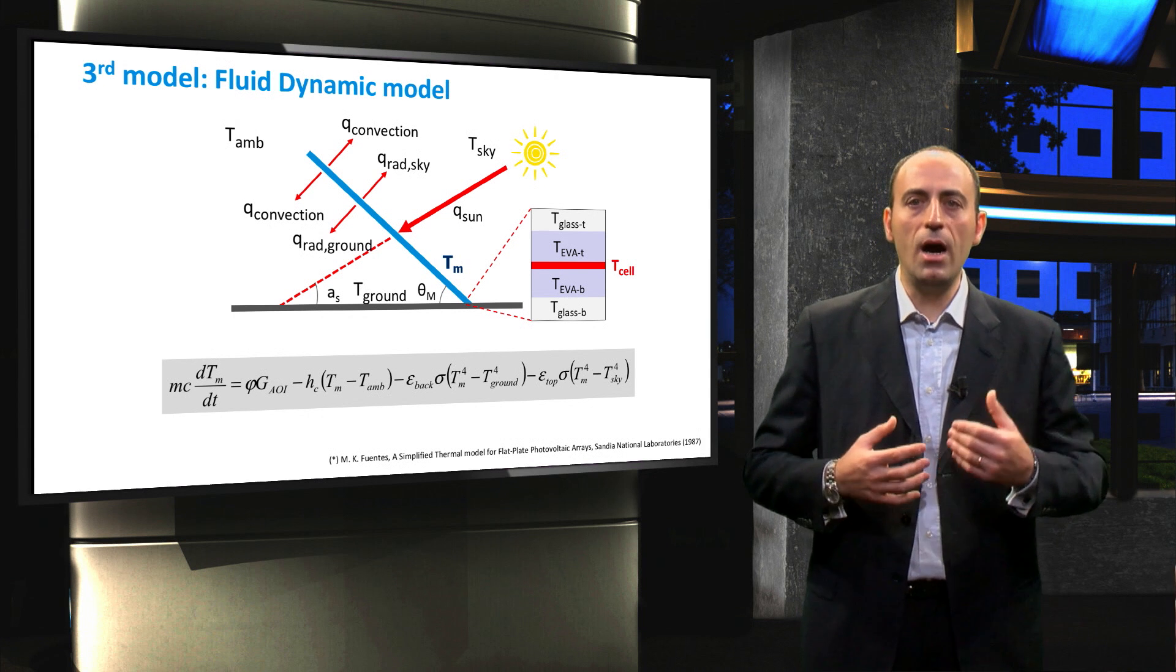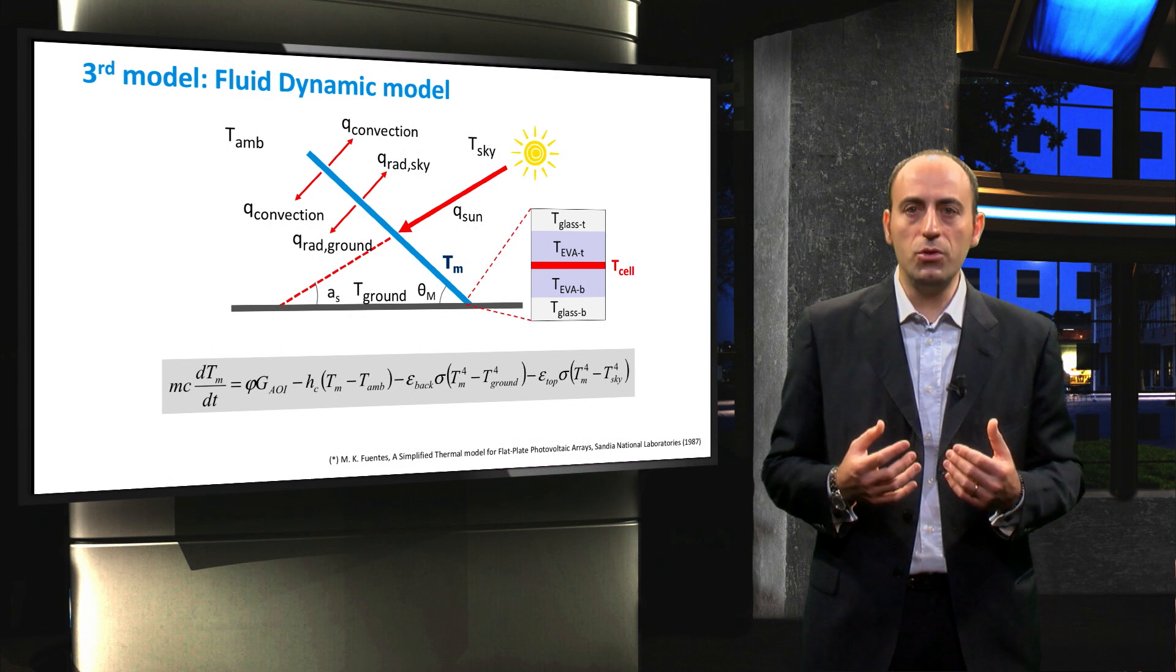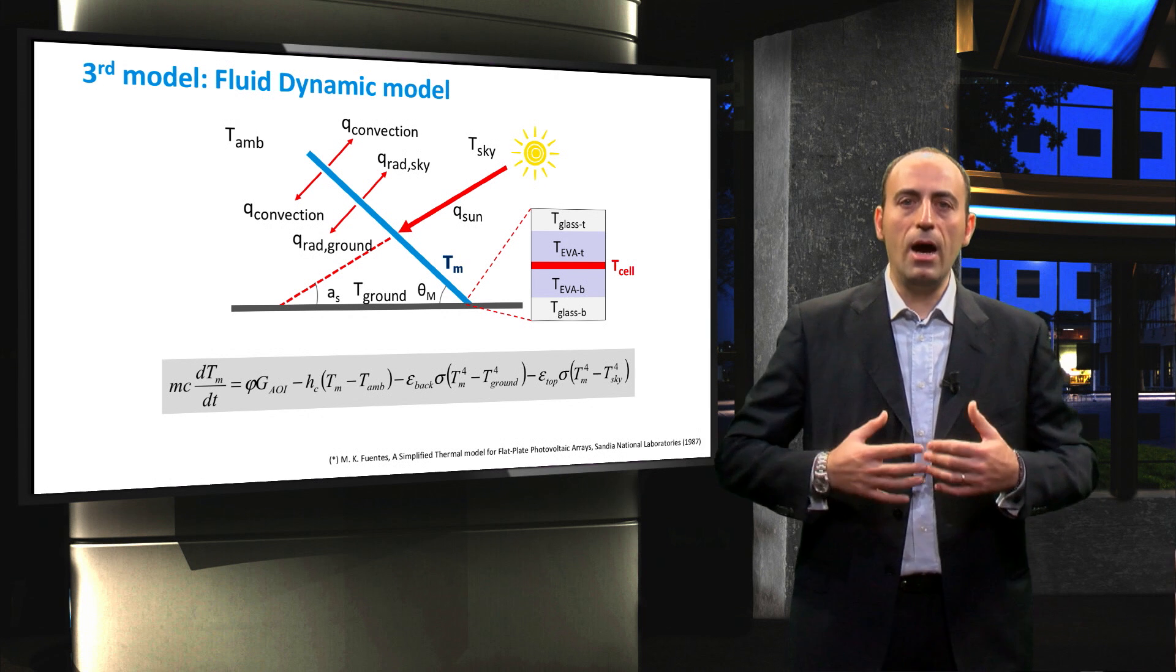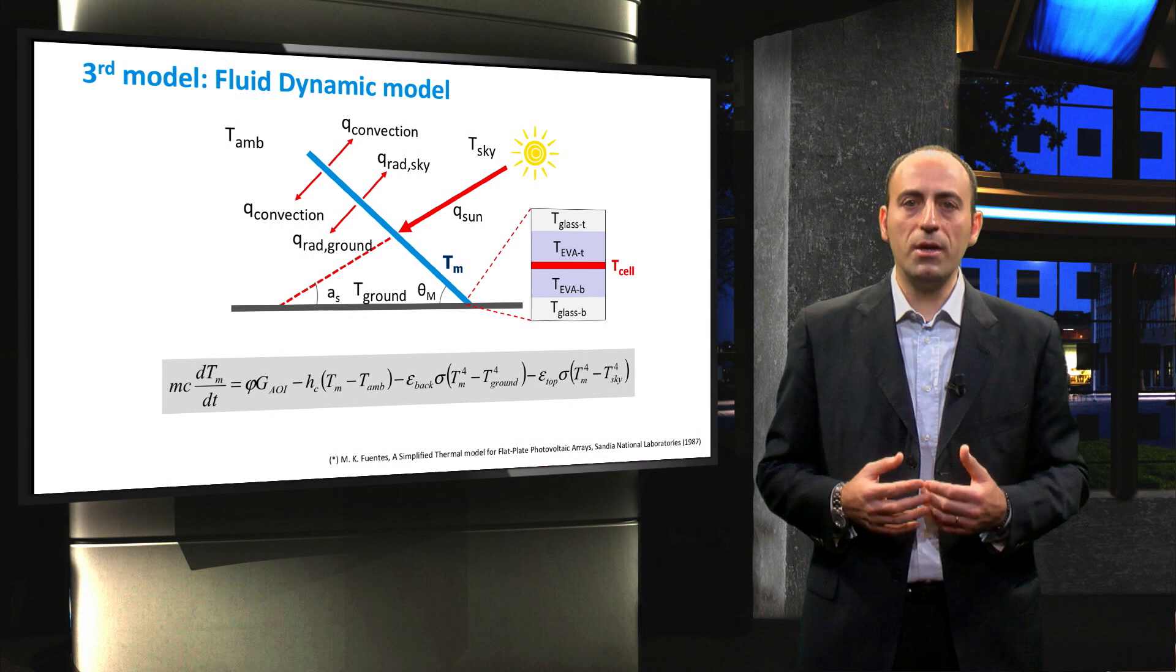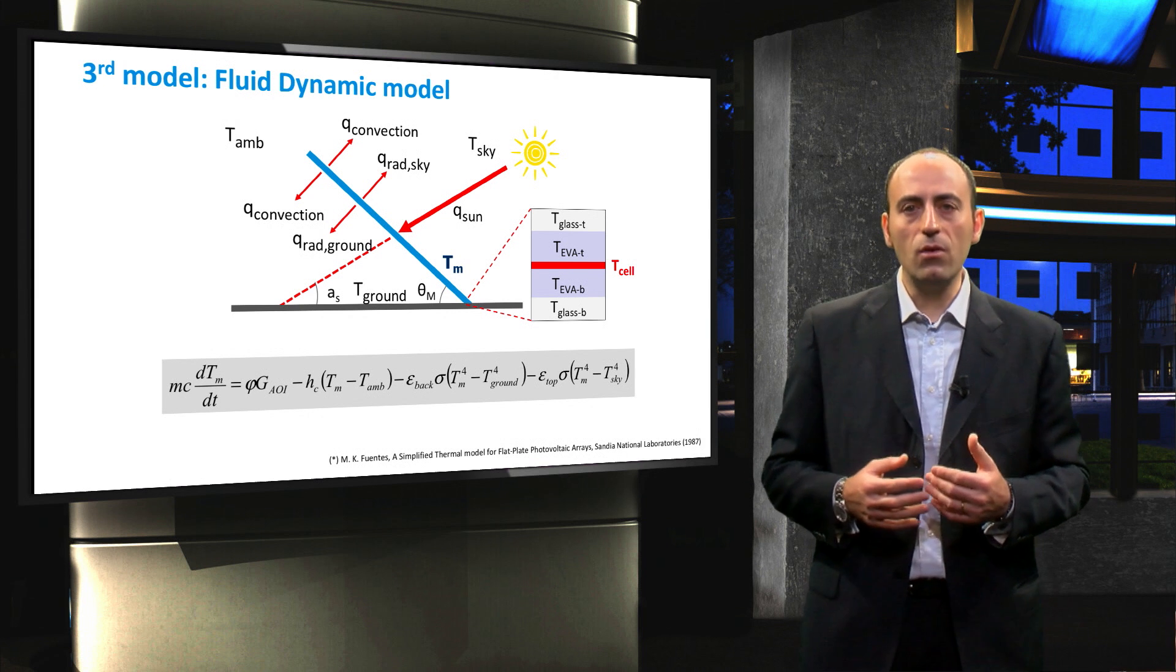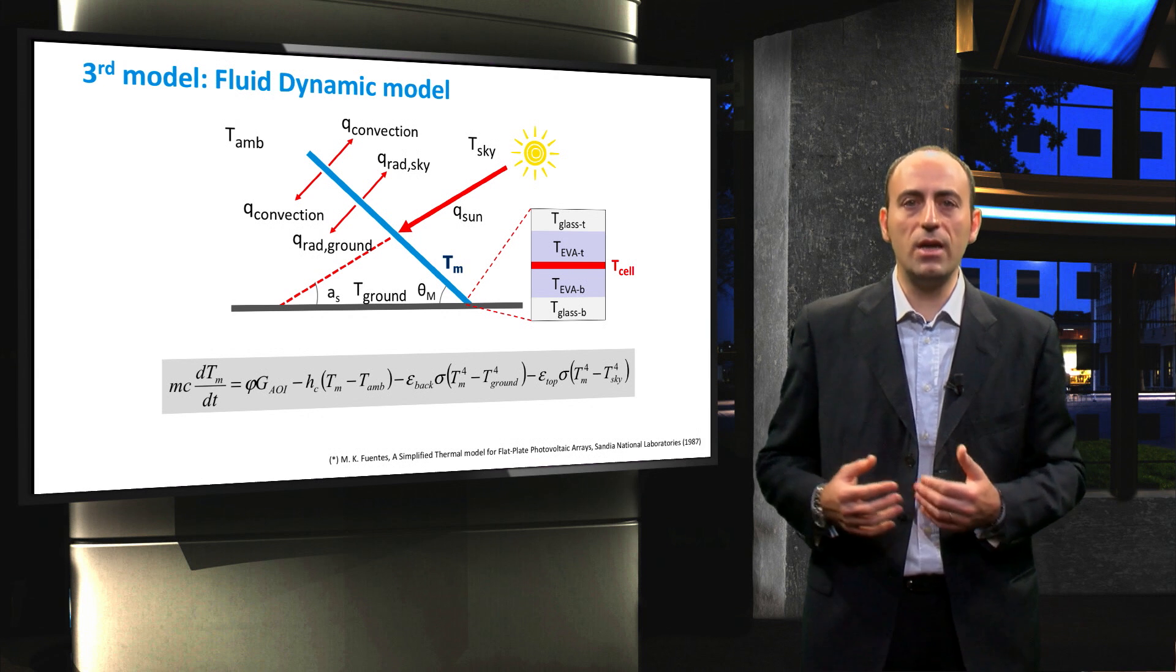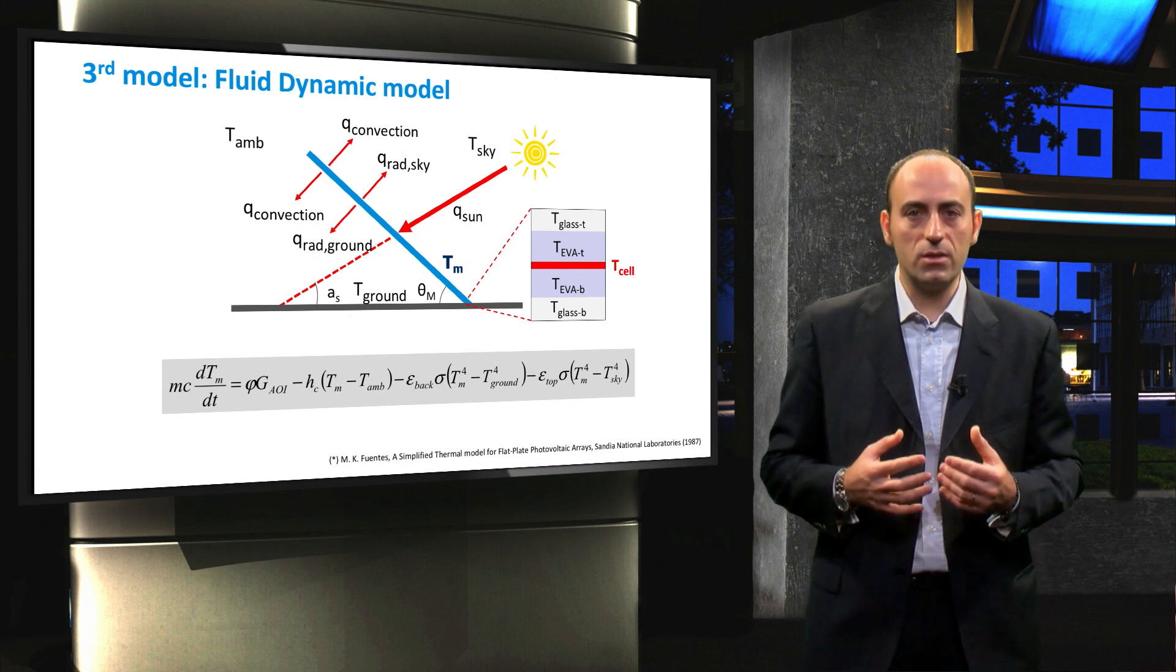This temperature will be higher than the temperature of the surface module because of the heat produced in the cell due to light absorption. However, our uniform temperature approximation is justified because the solar cell has a relatively low thickness compared to the EVA and to the glass layers, and also its heat capacity is lower than that of the other layers. This results in a very low thermal resistance of the cell.